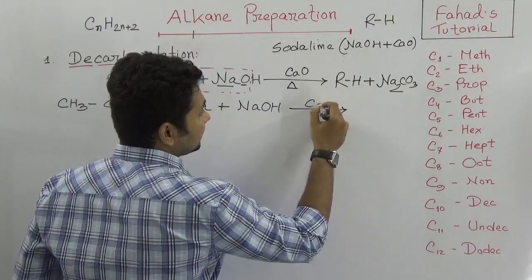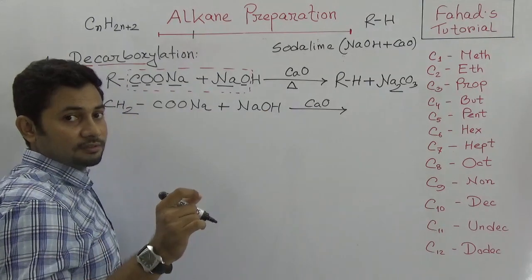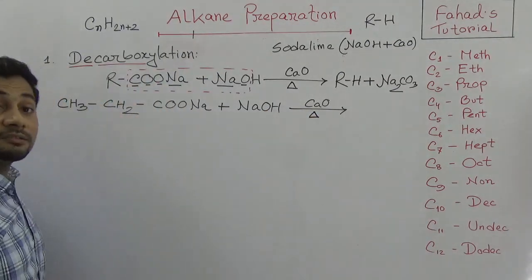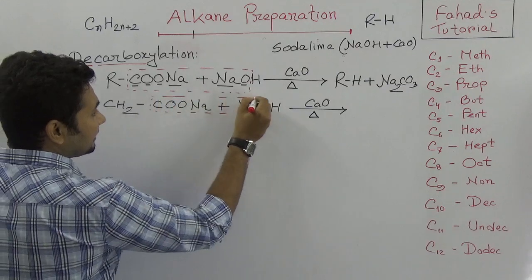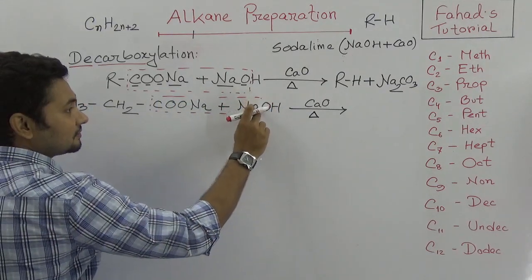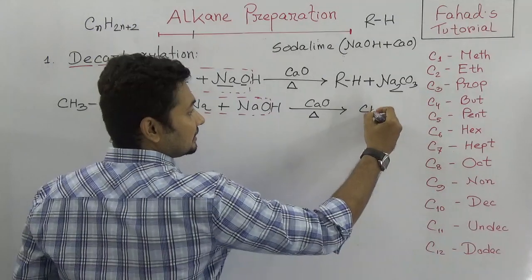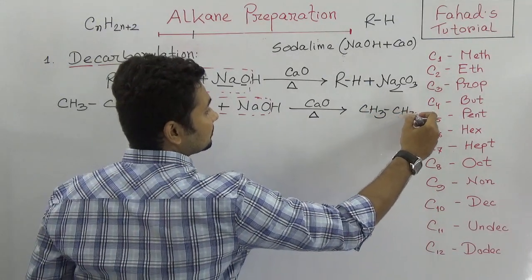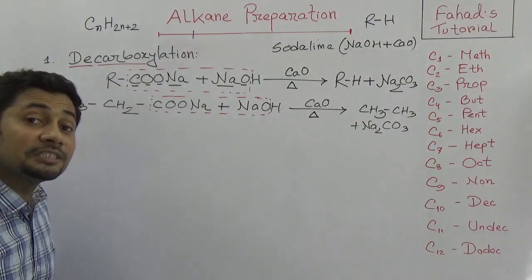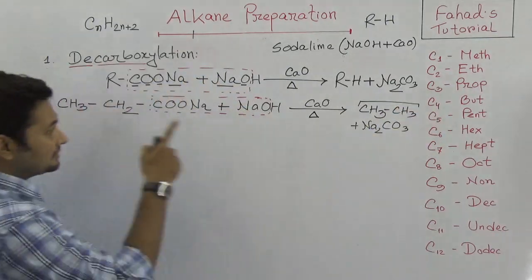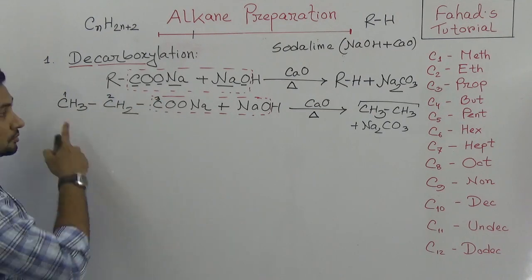To produce ethane (CH3–CH3), we take sodium propanoate: CH3–CH2–COONa, plus sodium hydroxide and calcium oxide (soda lime). Upon heating, the COONa reacts — it produces CH3–CH3 (ethane) and sodium carbonate as a byproduct. So we used a 3-carbon reactant (sodium propanoate) and produced a 2-carbon alkane (ethane).